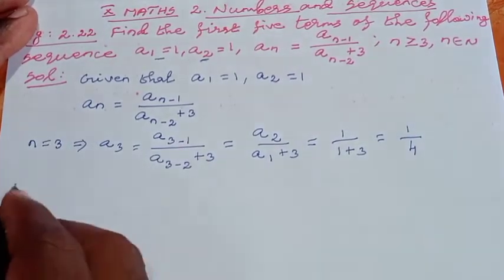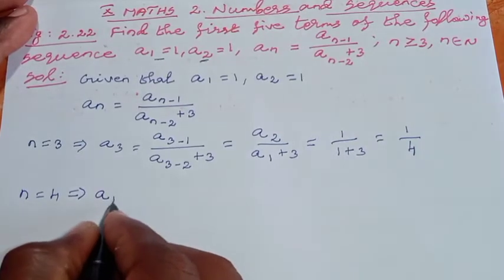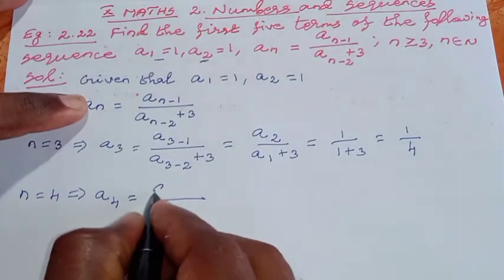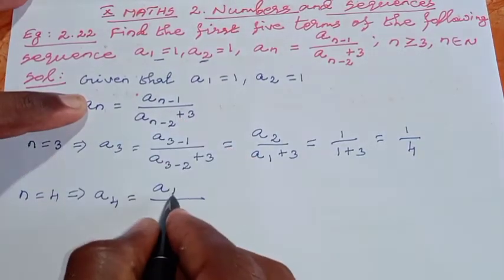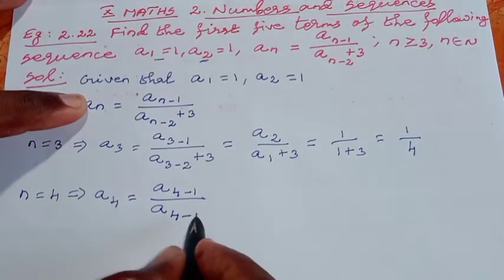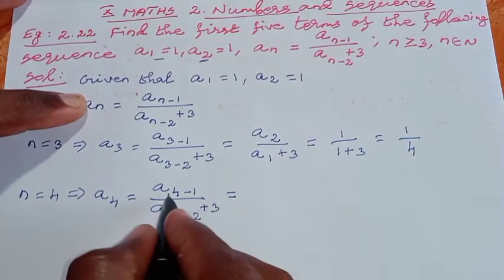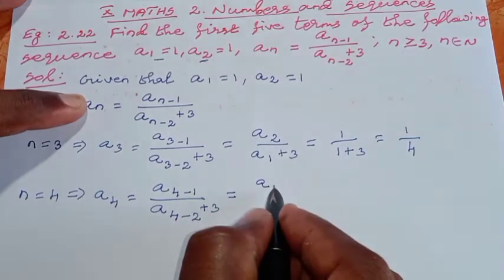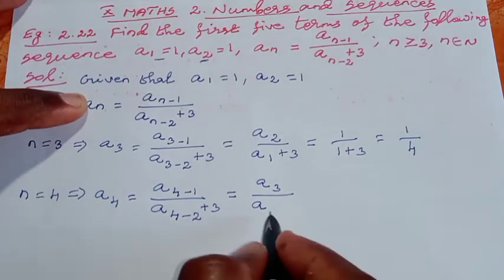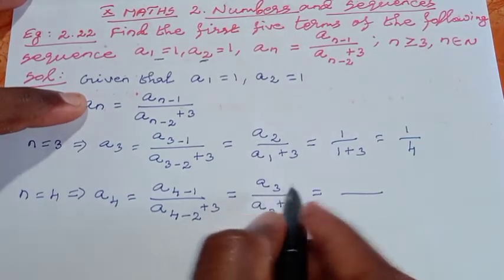Next, let's find the fourth term. n = 4, which implies a₄ = (a₄₋₁)/(a₄₋₂ + 3) = (a₃)/(a₂ + 3).